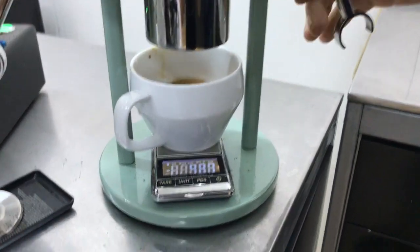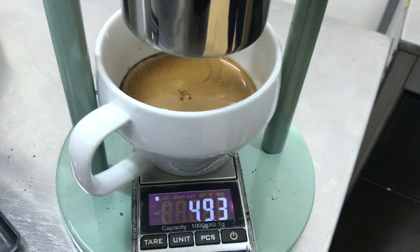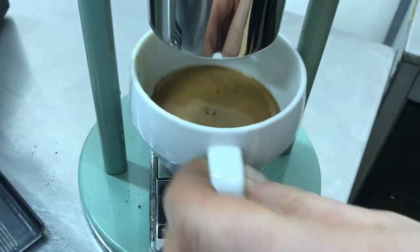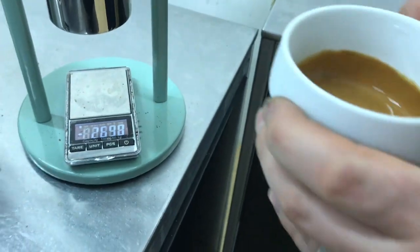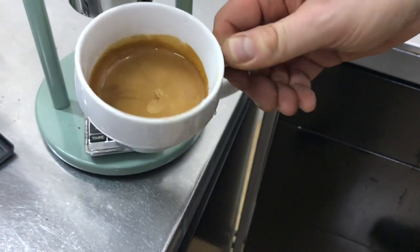So there's your one to two ratio. There we go. So that's 50 grams. I can get more out, but yeah.